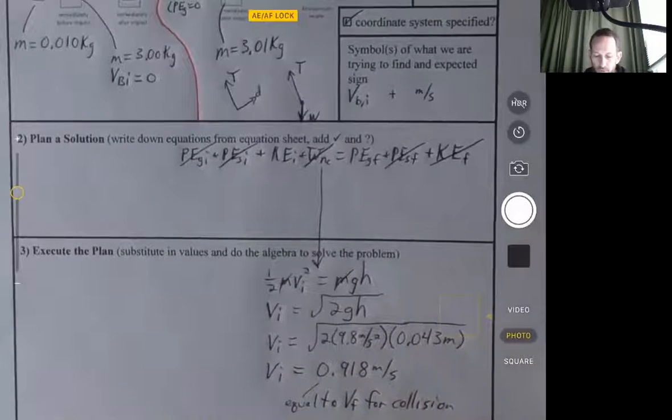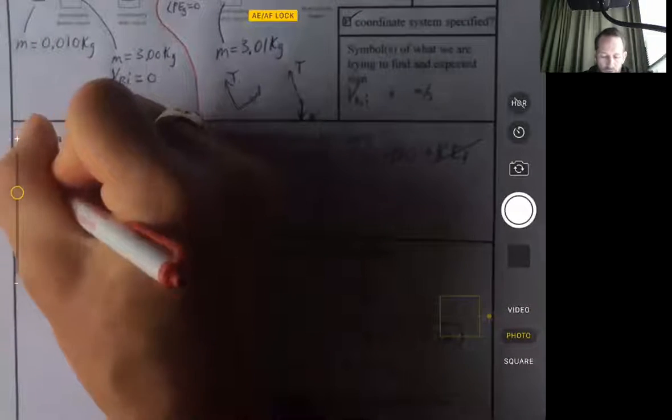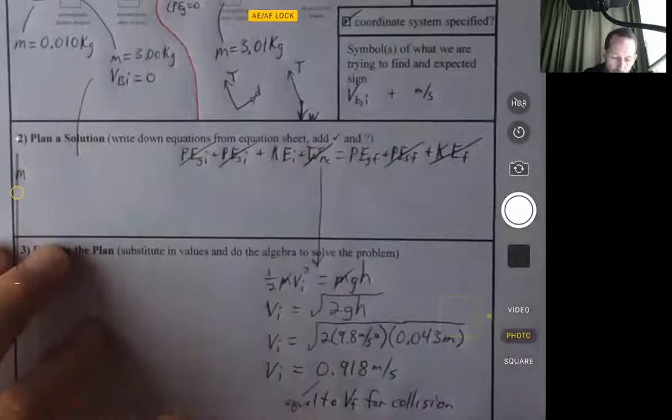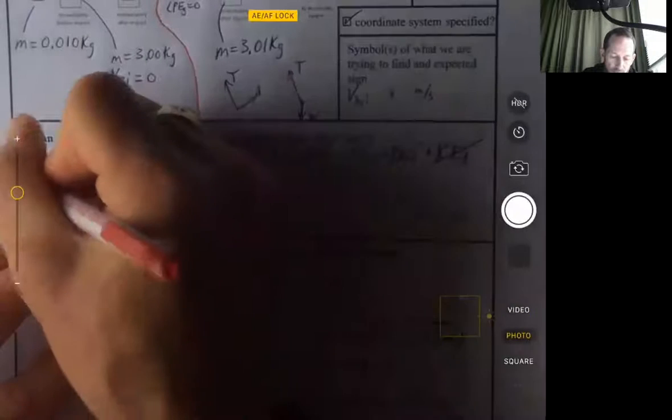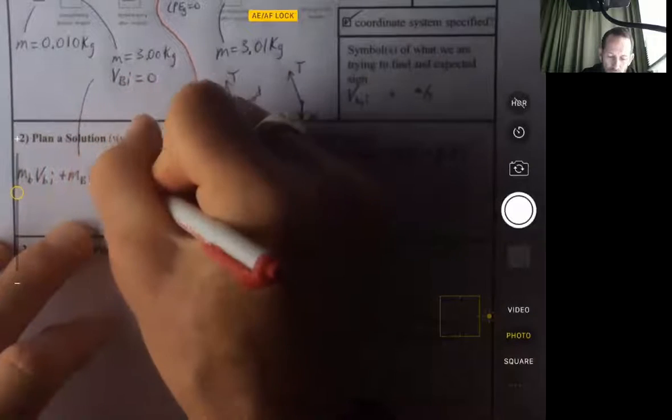All right, so now I want to look at the collision. Usually we use the subscripts like M-1, V-1-I. I'm going to do M-B, V-B-I plus M capital B, V capital B-I equals M-B, V-B-F plus M-B, V-B-F.